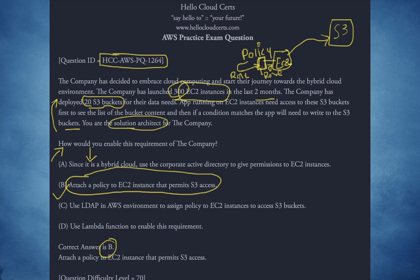Other incorrect choices: A — since it is a hybrid cloud, use the corporate Active Directory to give permissions to EC2. No — you want EC2 instances to access S3; there's nothing to do with corporate. You don't have to use a corporate directory; you can use IAM. If the requirement were that the company does not want another directory and only wants to use their on-premises one, there's no such information given here. So corporate directory is not necessary — that's an incorrect answer. C — use LDAP in the AWS environment to assign policy. We won't use LDAP either; no such requirement.